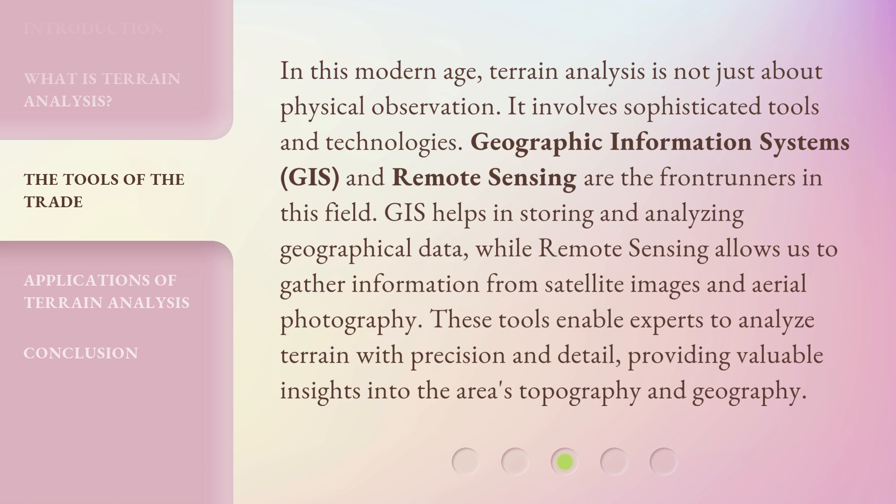GIS helps in storing and analyzing geographical data, while remote sensing allows us to gather information from satellite images and aerial photography. These tools enable experts to analyze terrain with precision and detail, providing valuable insights into the area's topography and geography.